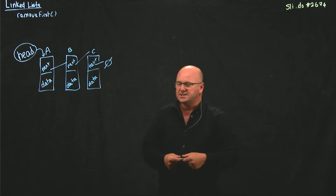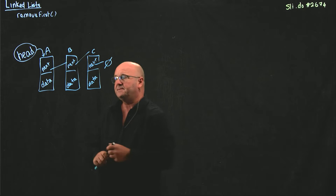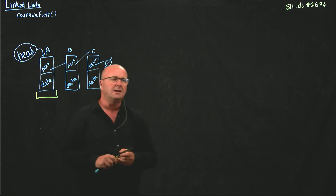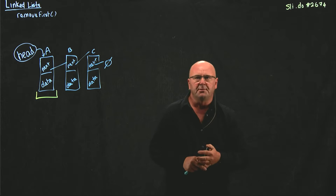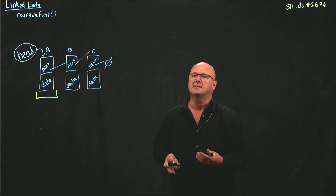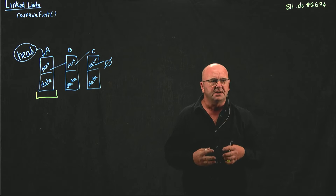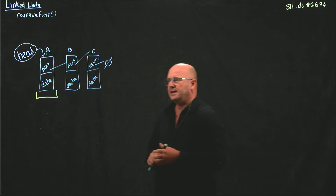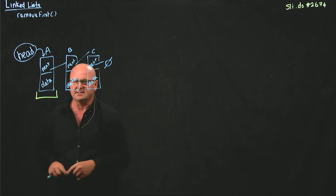What we're trying to do here is to remove the first node, node A, from our list. We want to remove the pointer that points to that node, and we want to return the entity that's stored in data, whatever that is.